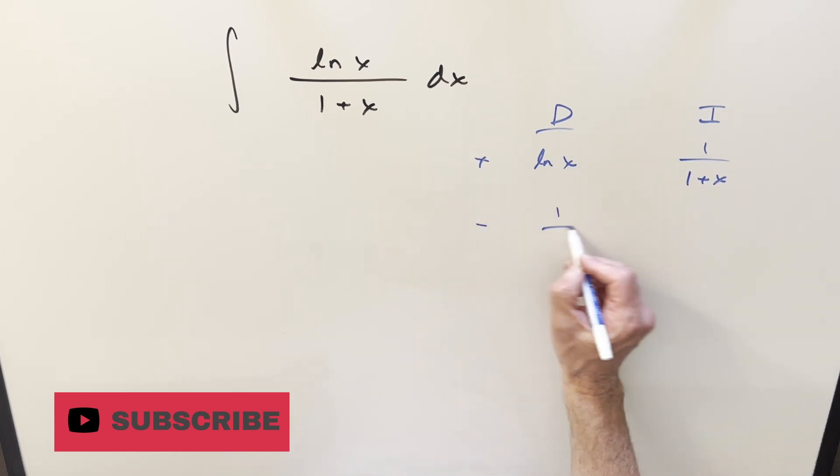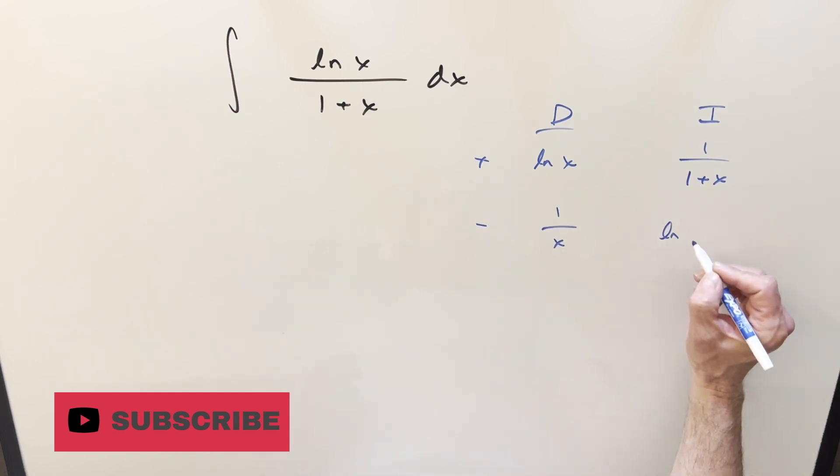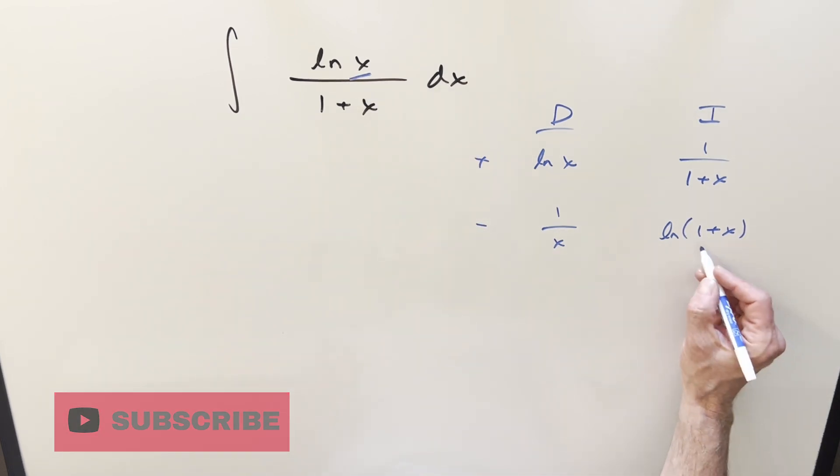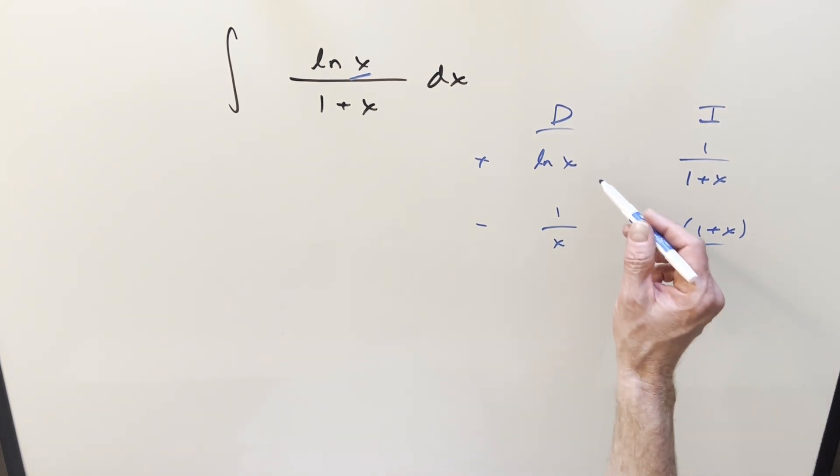Derivative of that is going to be minus 1 over x. Integral here, natural log of 1 plus x, drop the absolute value, because here we know x has to be greater than 0, so then of course 1 plus x is greater than 0.